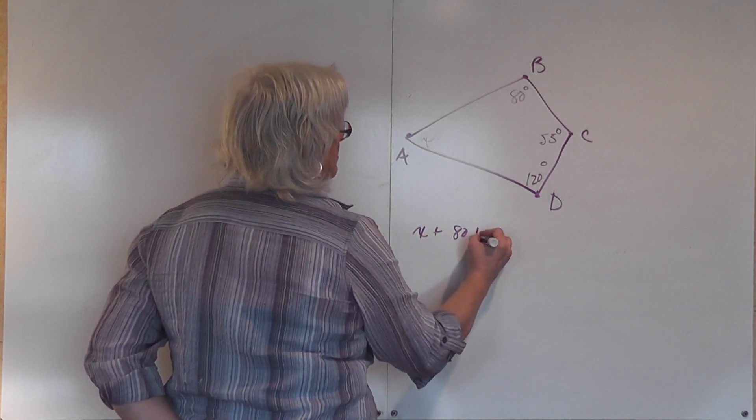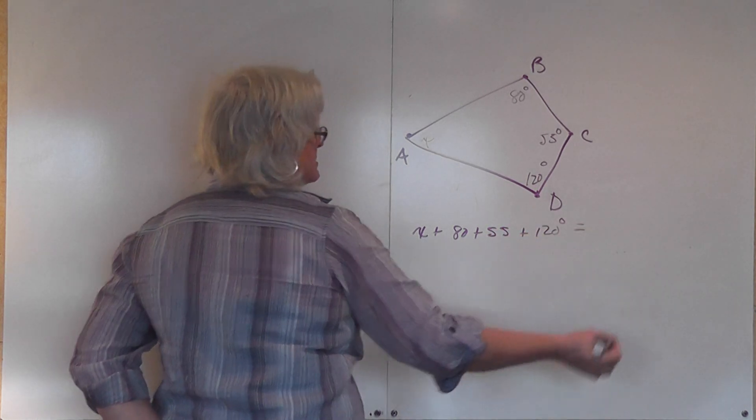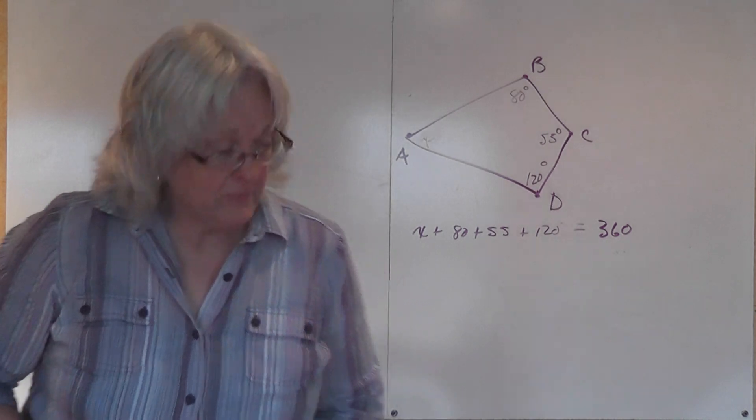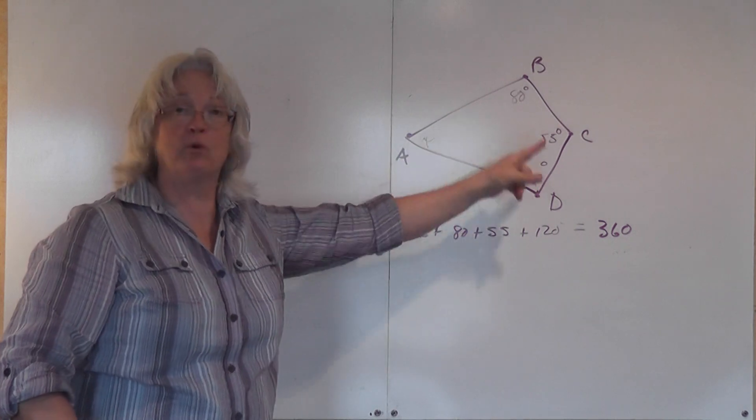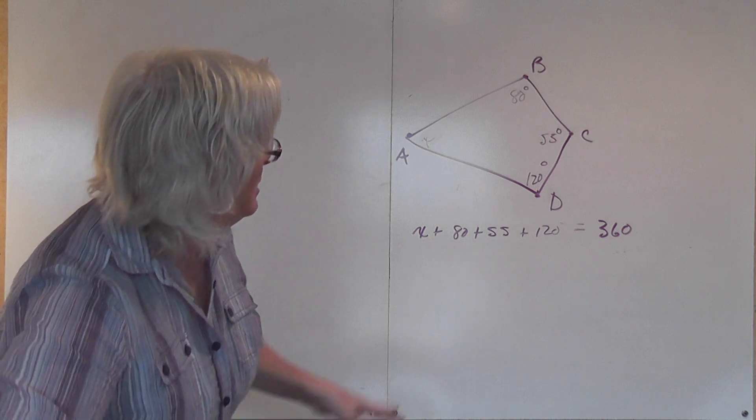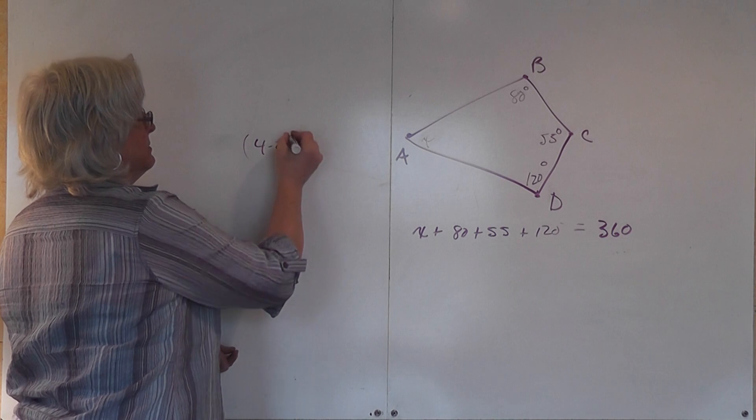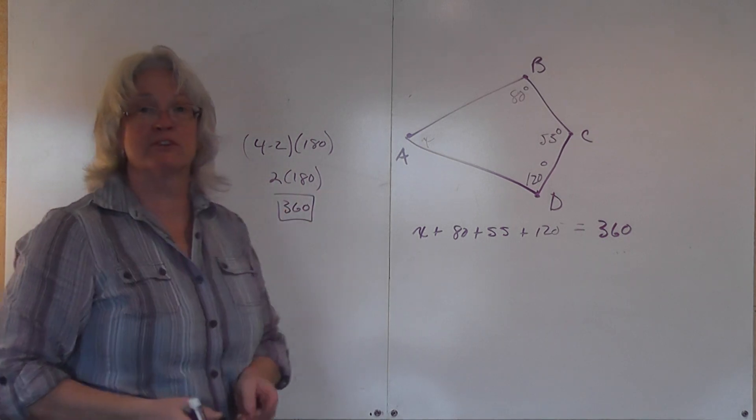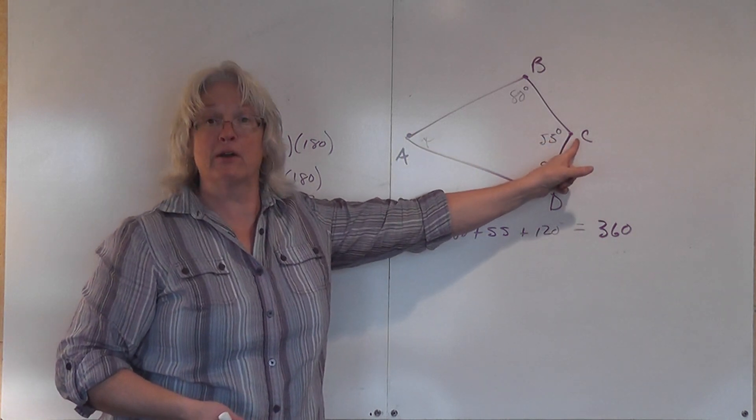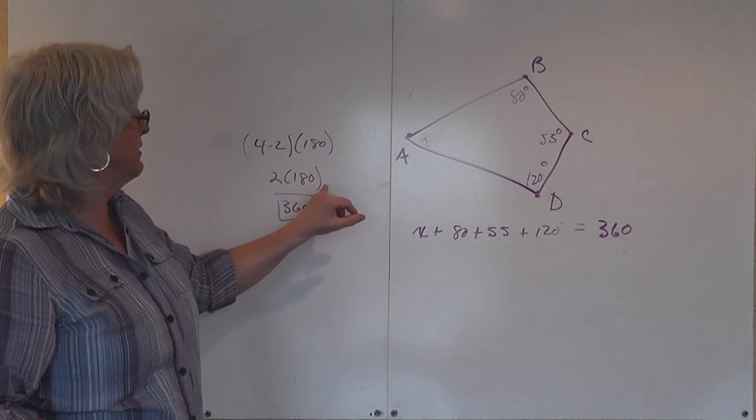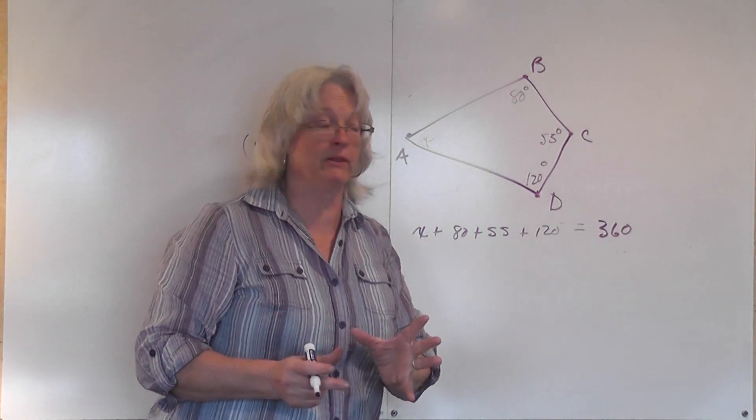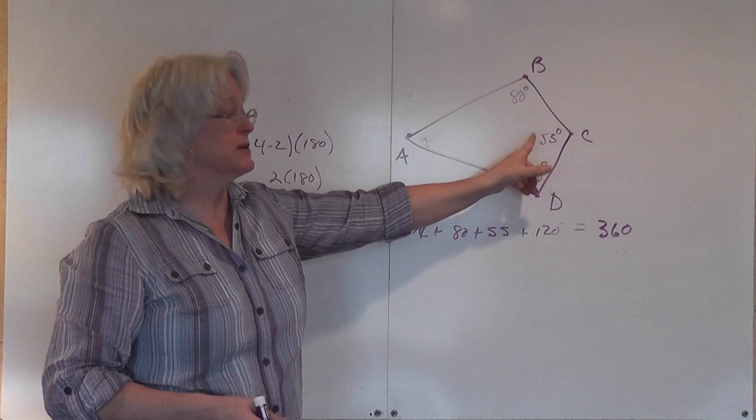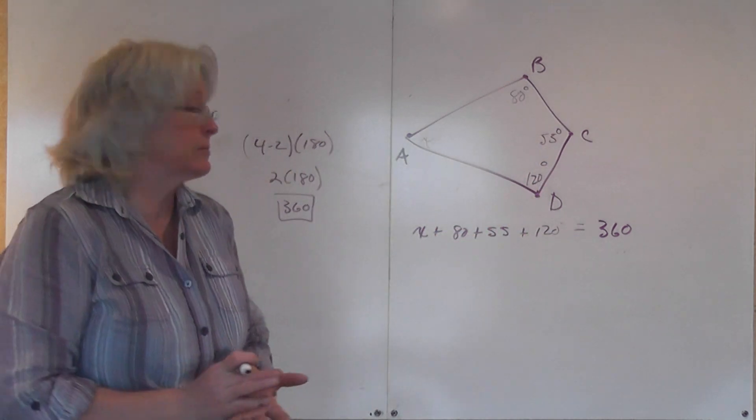X plus 80 plus 55 plus 120 is equal to 360. How in the world did I come up with that? What I know is because I have a four-sided figure, that the total number of degrees in that figure is four minus two times 180, two times 180, or 360. Let's draw a line from here to here, divide our quadrilateral into two triangles. So two triangles of 180 degrees each tells us that the sum of all of those angles has to be 360.